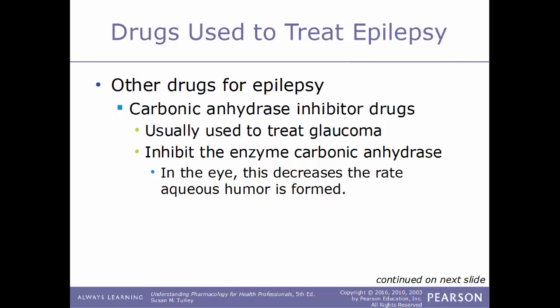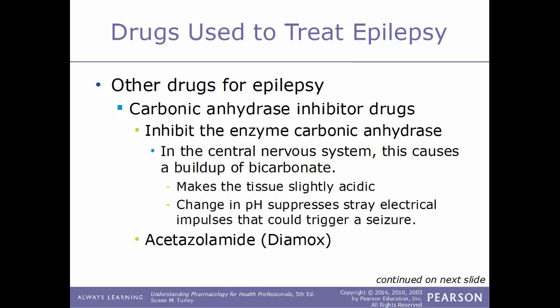Another type are carbonic anhydrase inhibitor drugs, usually used to treat glaucoma. These inhibit the enzyme carbonic anhydrase — in the eye, decreasing aqueous humor formation; in the central nervous system, causing a buildup of bicarbonate that makes tissue slightly acidic, suppressing stray electrical impulses that could trigger a seizure. An example is acetazolamide, also known by its trade name Diamox.